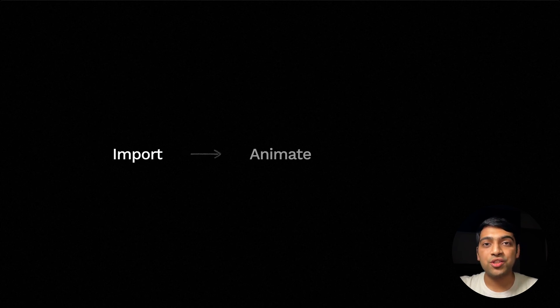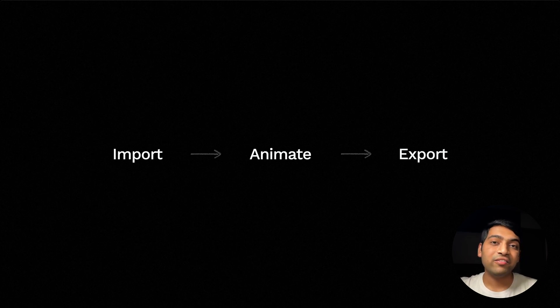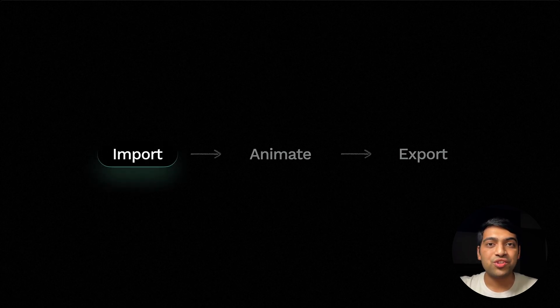Every Slant It workflow is divided into three stages. The first stage is Import — this is where you bring in your media that you want to edit with Slant It: your screen recordings, video files, image files, anything you want to edit. The next stage is Animation, where you add in the 3D animations that Slant It has to bring a unique 3D perspective to the video you're creating. Finally, the last stage is Export, where you export your creation to share it with the rest of the world. Slant It V2 adds a lot of new features to all of these stages, but let's start with Import.